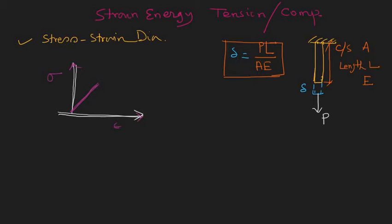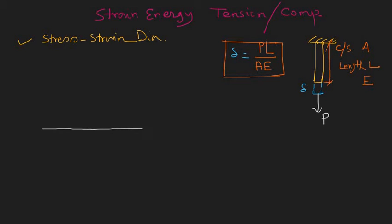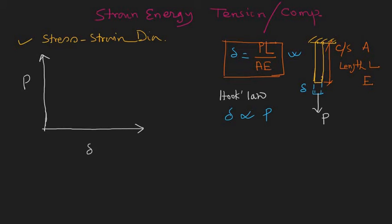Instead of using stress and strain, we now use force and deflection. The x-axis represents deflection delta and the ordinate represents load. If the material is within the elastic limit and follows Hooke's law, delta is proportional to load, so the diagram is simply a straight line.